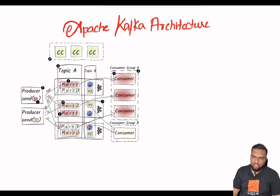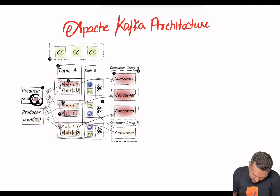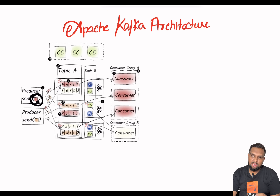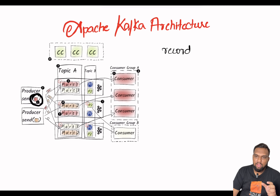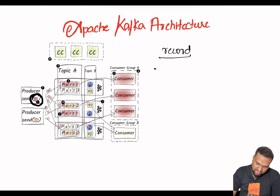Looking carefully at the diagram on screen, firstly we have messages. Messages make up the payload and they are also referred to as records. Messages are sent as byte arrays, and under the hood they are typically grouped into batches before being sent. It's very important to understand that it's a byte array format that's being transmitted.